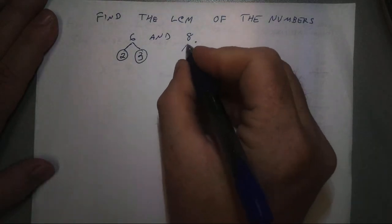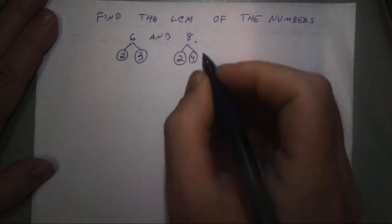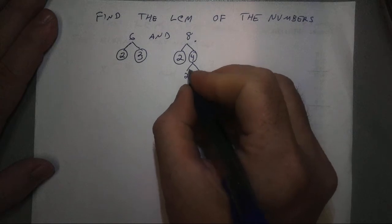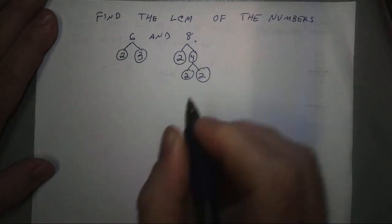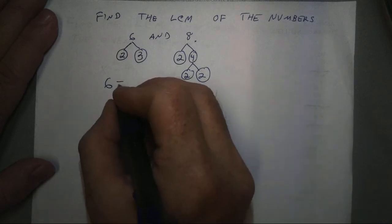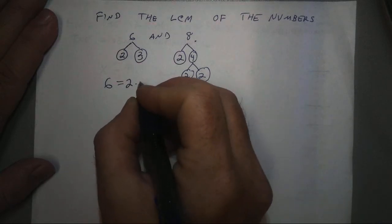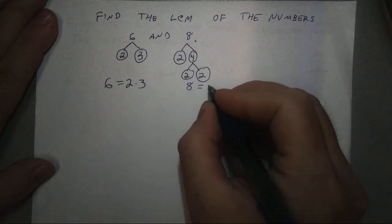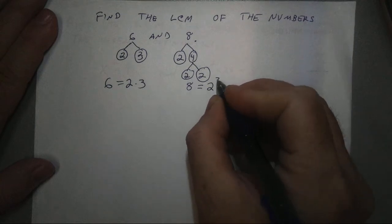The factors of 8 are 2 and 4. 2 is prime, but 4 is not. So, I can write 8. 6 is the product of prime factors 2 and 3, and 8 is the product of 2 times itself 3 times.